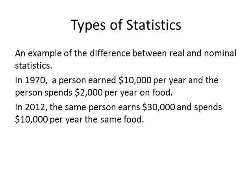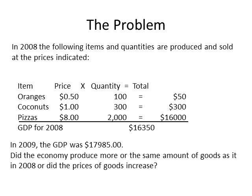So let's look at the impact of why real statistics are important in discussing GDP. Let's assume that our economy is very simple and only produces three goods: oranges, coconuts, and pizzas. Oranges sell for $0.50 and 100 oranges are sold during the year, adding $50 to GDP. Coconuts sell for $1 each and 300 coconuts are sold during the year, adding $300 to GDP. Pizzas sell for $8 a piece, and 2,000 pizzas are sold during the year, adding $16,000 to GDP. Adding up all three totals, the total GDP is $16,350.